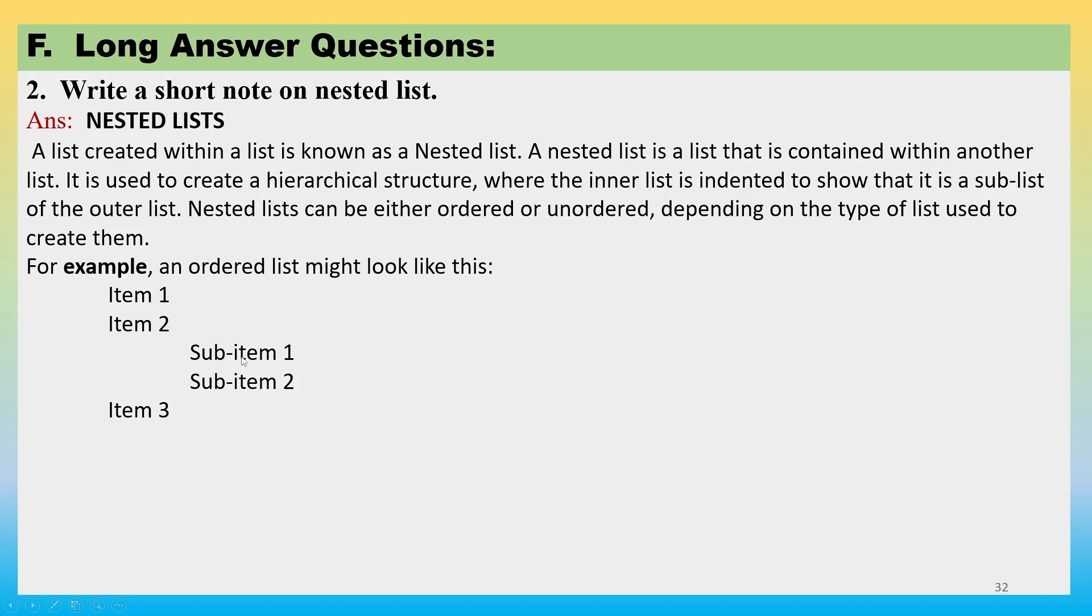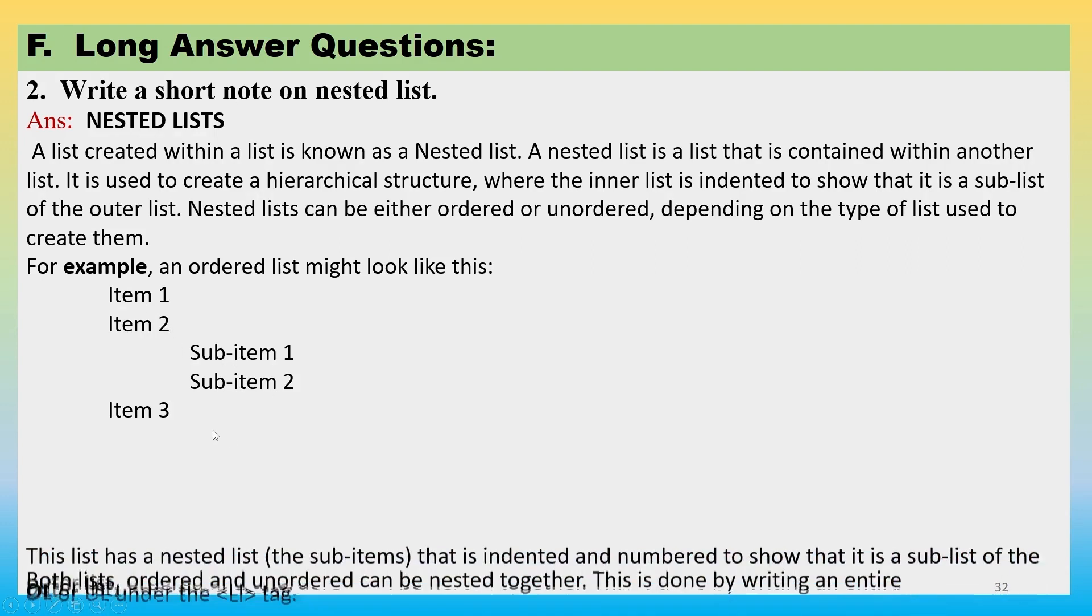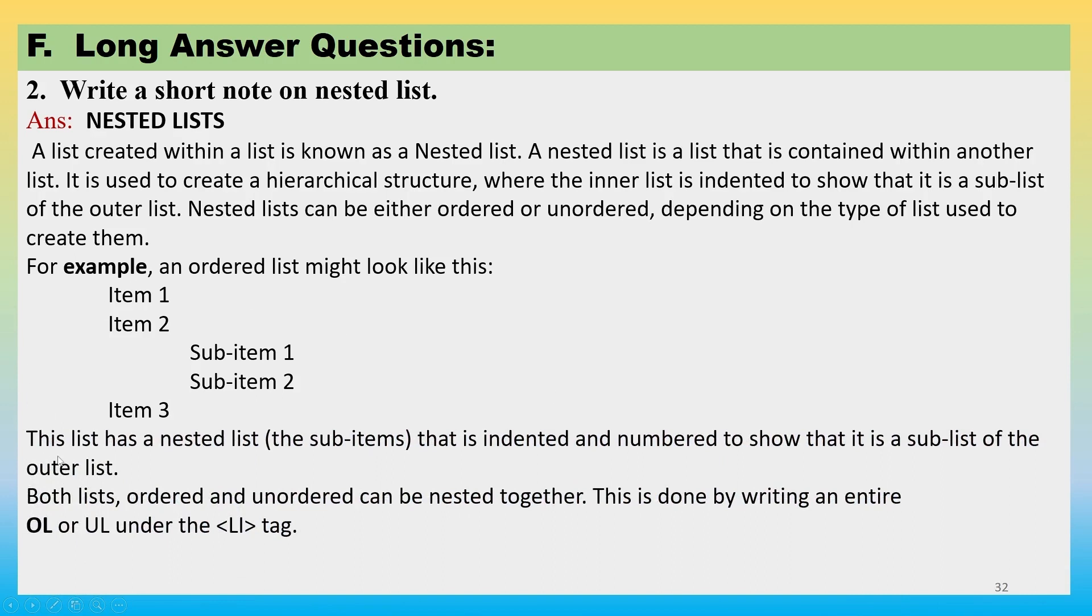So within these three items, the second item is having 2 sub-items. This list has a nested list (the sub-items) that is indented and numbered to show that it is a sub-list of the outer list. Both lists, ordered and unordered, can be nested together. This is done by writing an entire OL or UL under the LI tag.